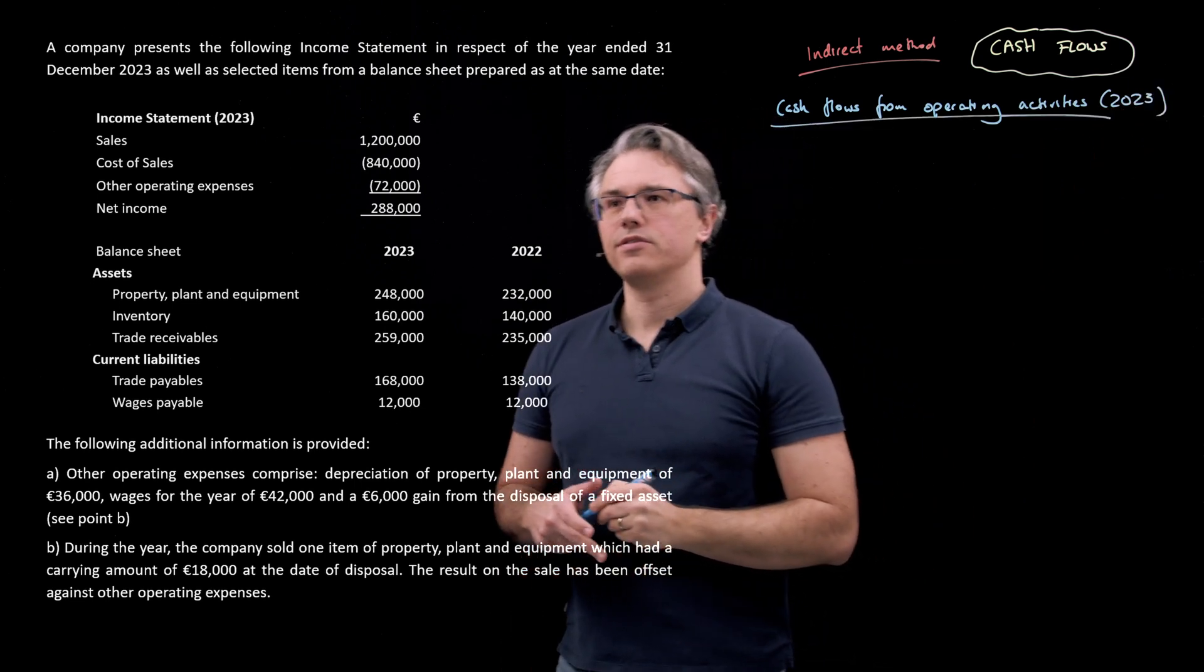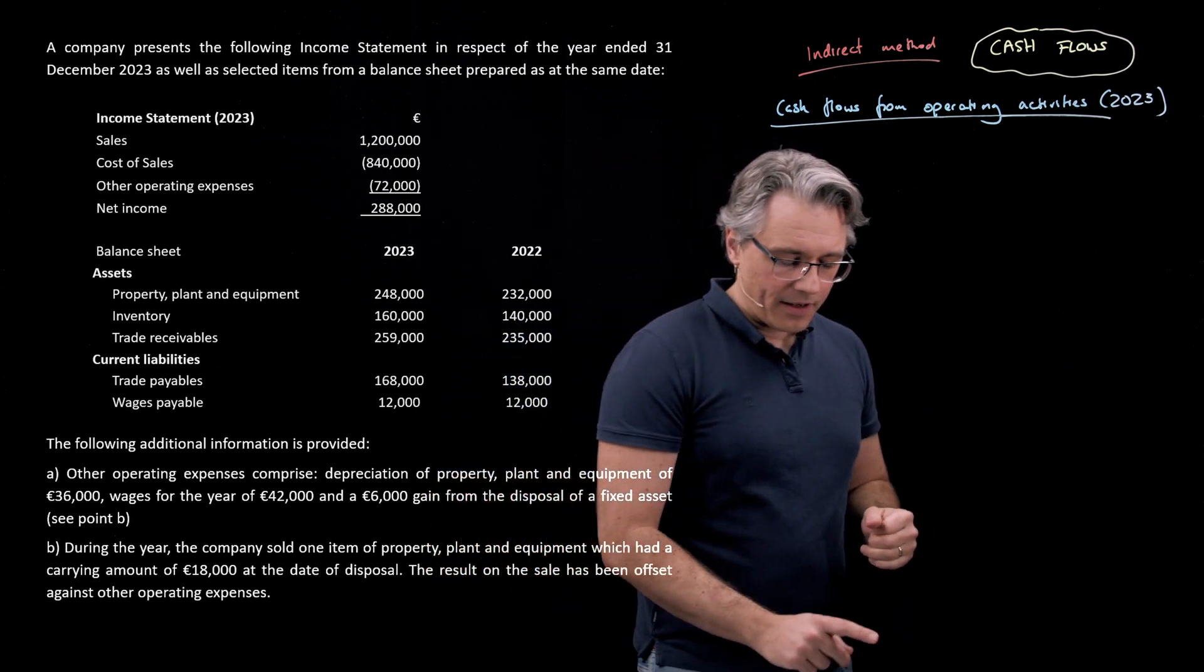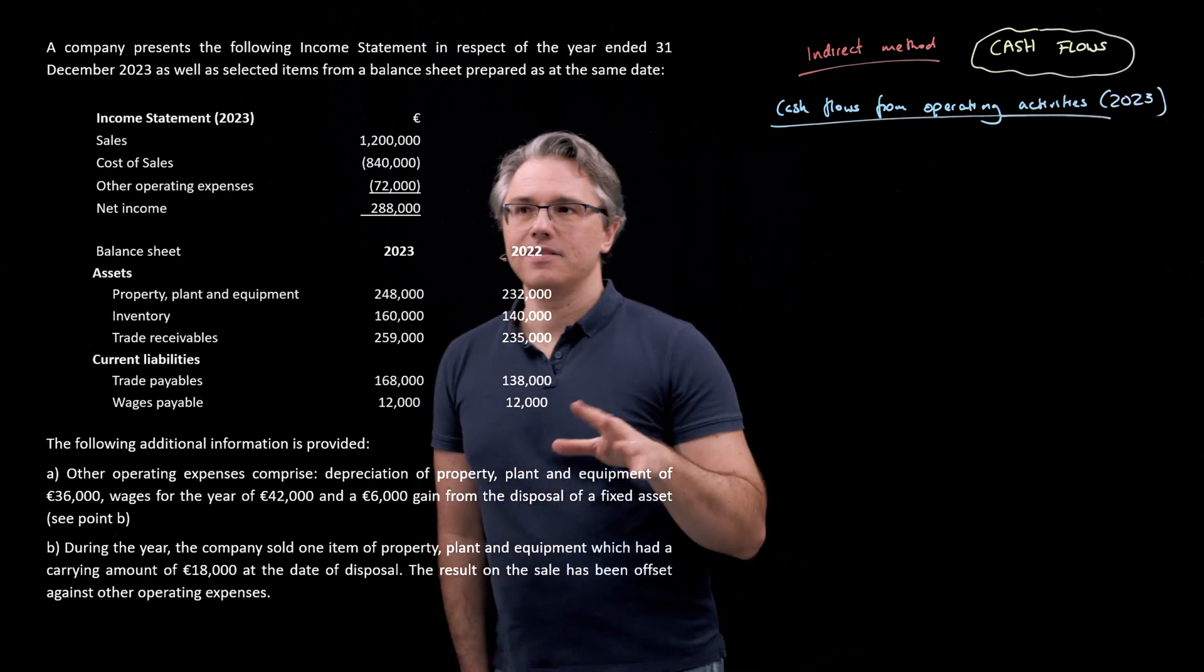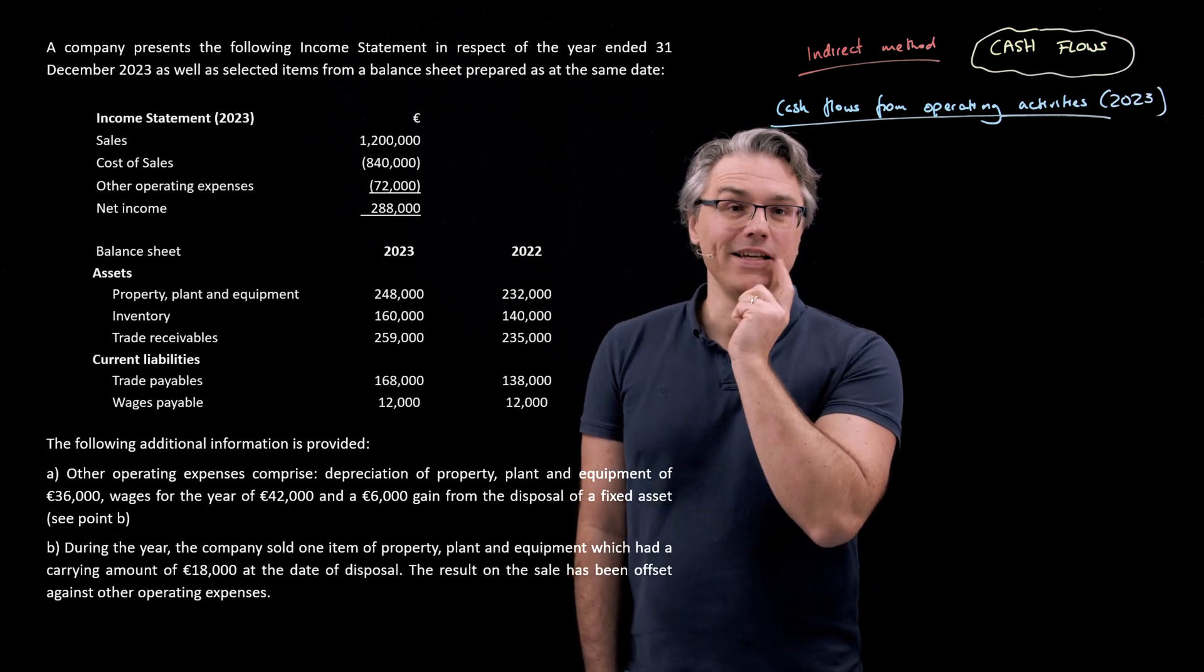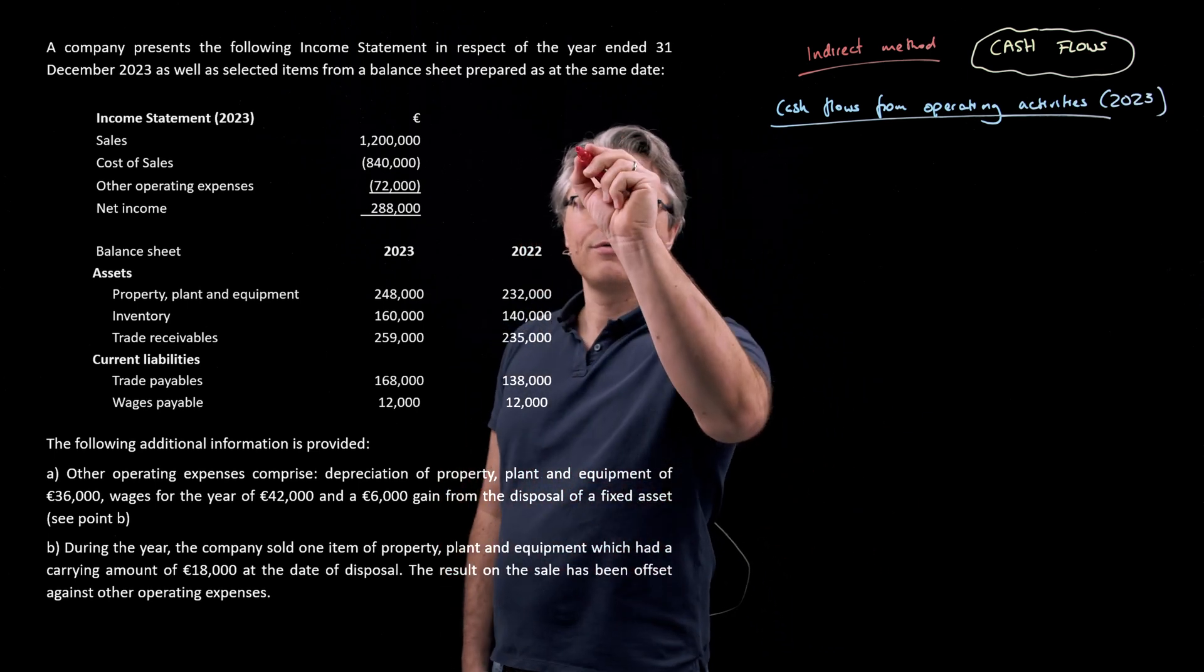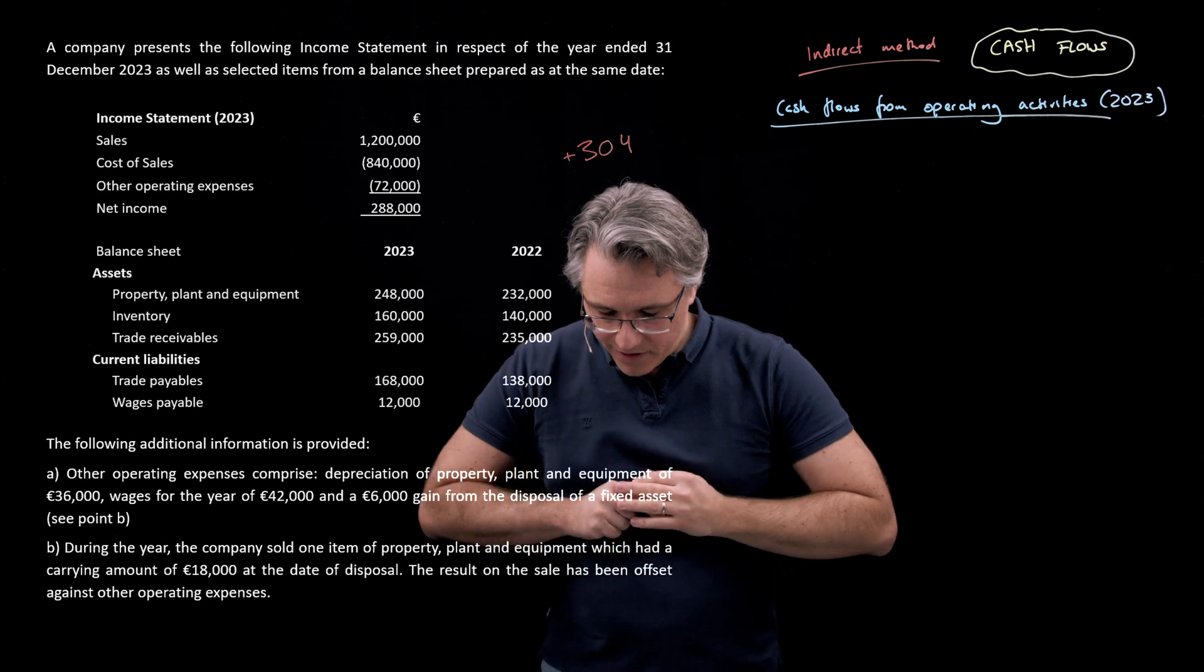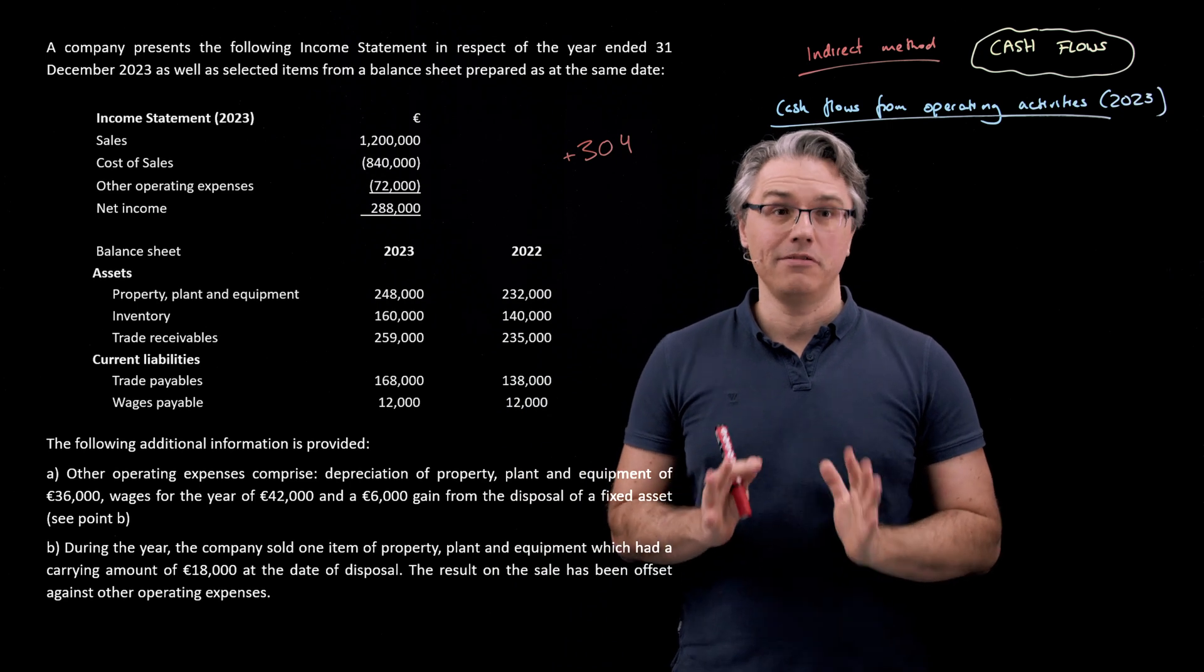We are still computing cash flows from operating activities for the year 2023. I'm going to assume you remember what we did in the previous video. At the end we will arrive at the same figure. In the previous recording we arrived at cash flows from operating activities equal to 304,000 euros, positive. It would be good if we arrived at the same figure here because we're going to follow a different methodology but the results should be the same.